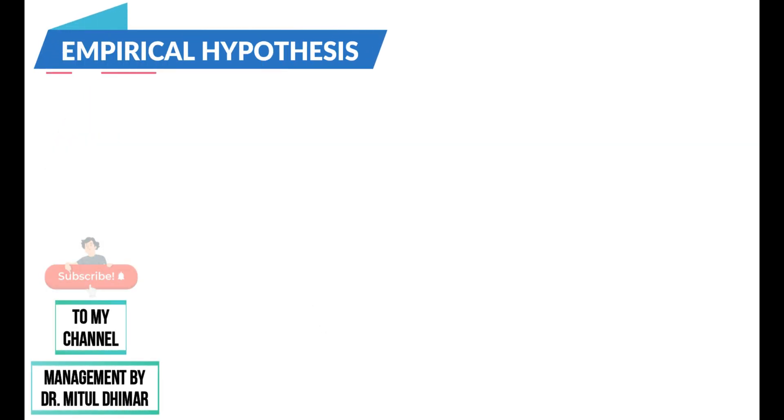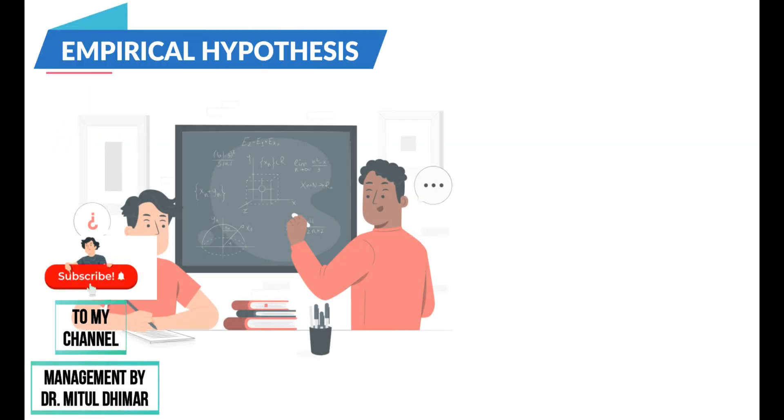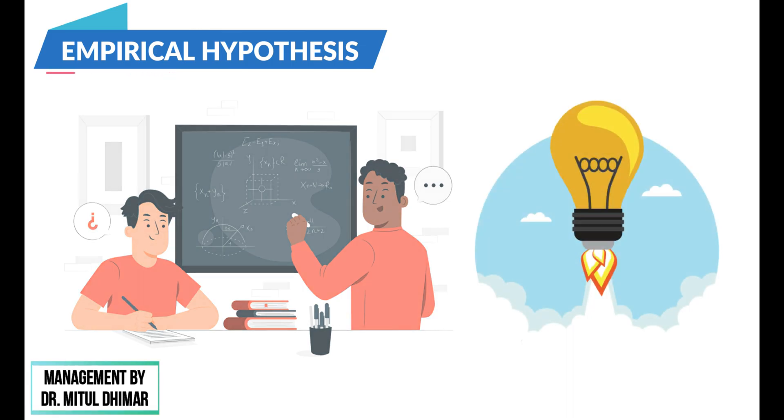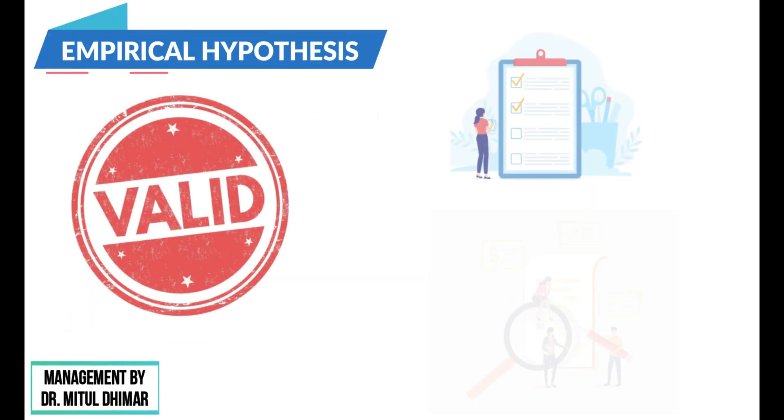Number three, empirical hypothesis. An empirical hypothesis is also termed as working hypothesis. These hypotheses take place when an idea or a theory becomes valid by undergoing various tests and observations.